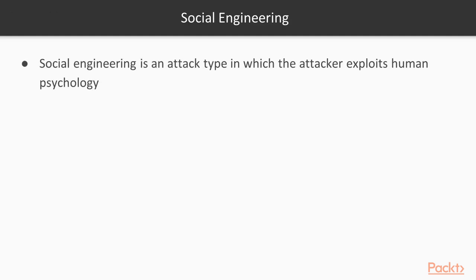Social engineering is an attack type in which the attacker exploits human psychology. In a social engineering attack, the attacker tries to manipulate humans to get information about sensitive details, like phone numbers, fax numbers, office address, who is the boss, what is the boss's name, what is the boss's number. These kinds of information can be grabbed by using a social engineering attack.